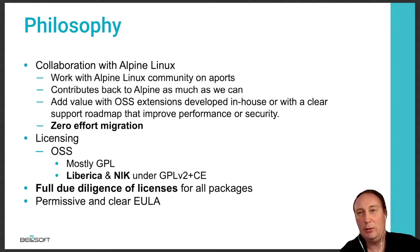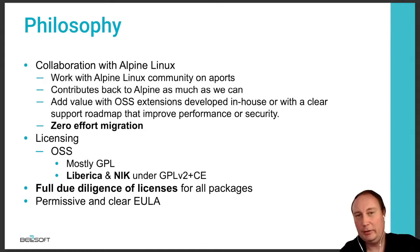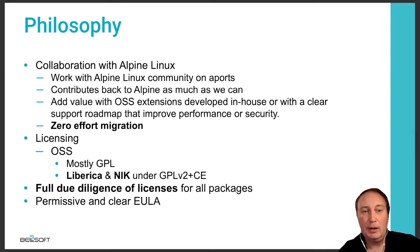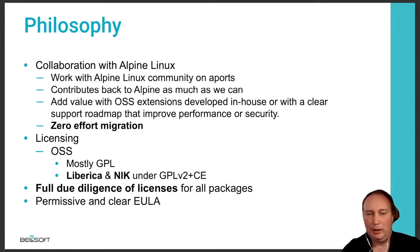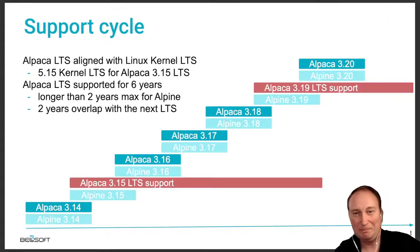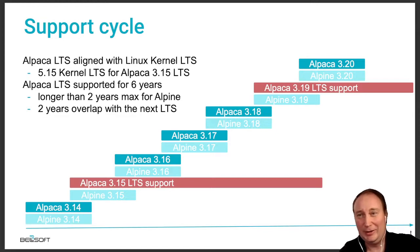Alpaca is based on Alpine Linux, and our intent is to contribute as much as possible back to the Alpine community — the same approach we take in OpenJDK — keeping zero or almost zero effort for migration between Alpine and Alpaca. We also provide clear licensing and due diligence for all components in our repositories. We offer Liberica JDK and Liberica Native Image Kit under a clear GPLv2 with classpath exception license, all as free software.